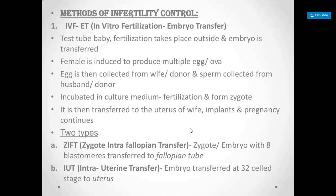In IVF, the egg is fertilized to form a zygote. That zygote develops into an embryo, which is then transferred to the wife's uterus. Once transferred, the pregnancy continues.